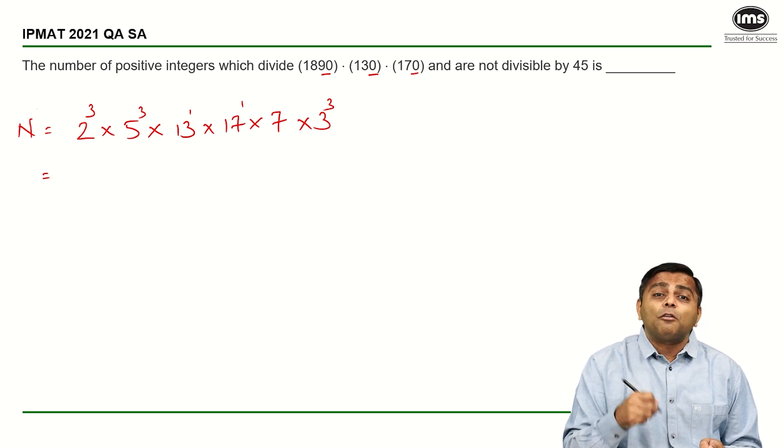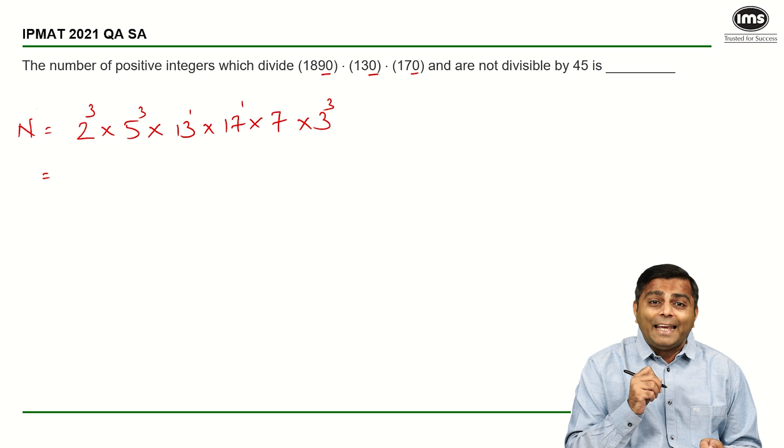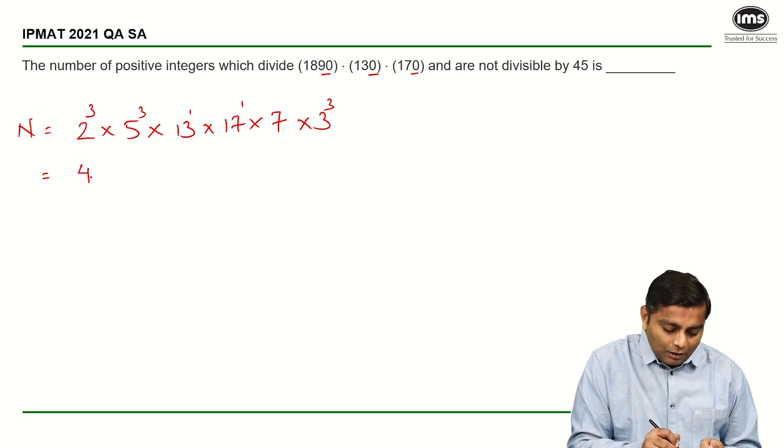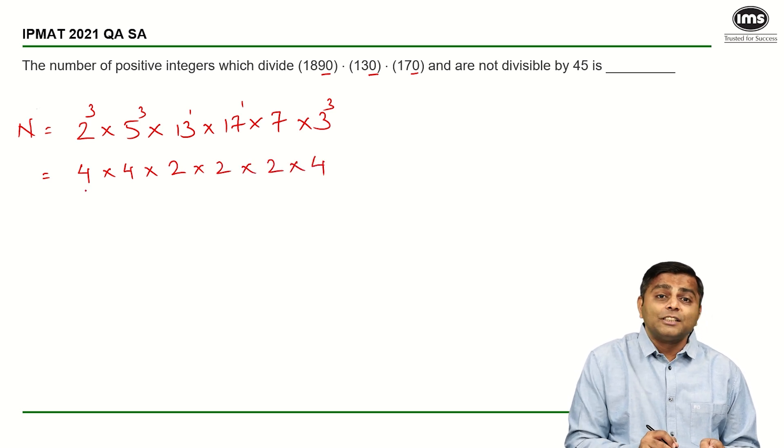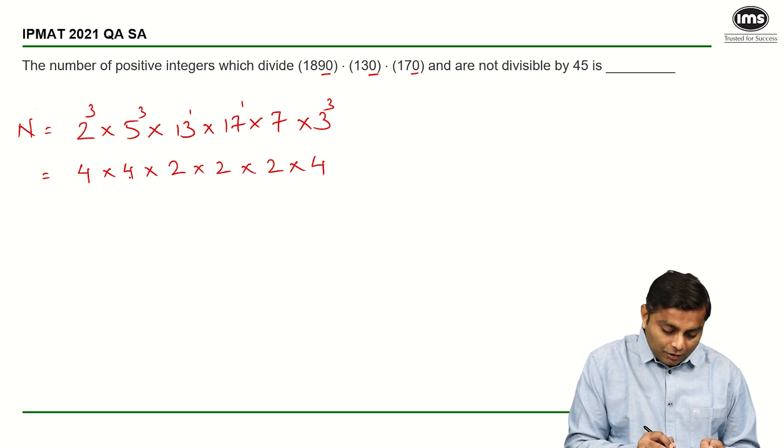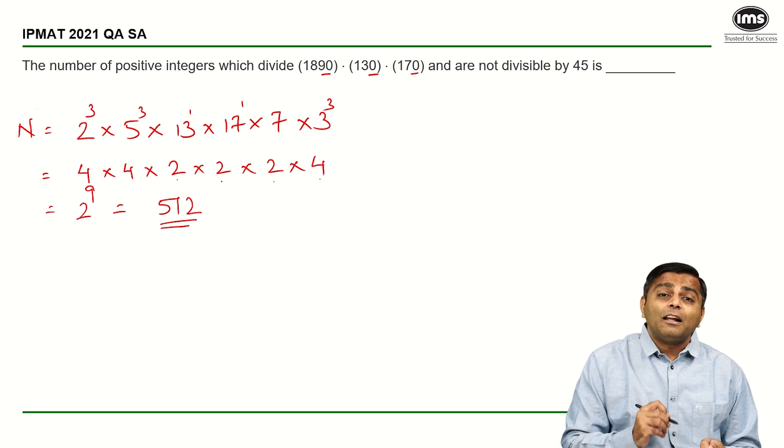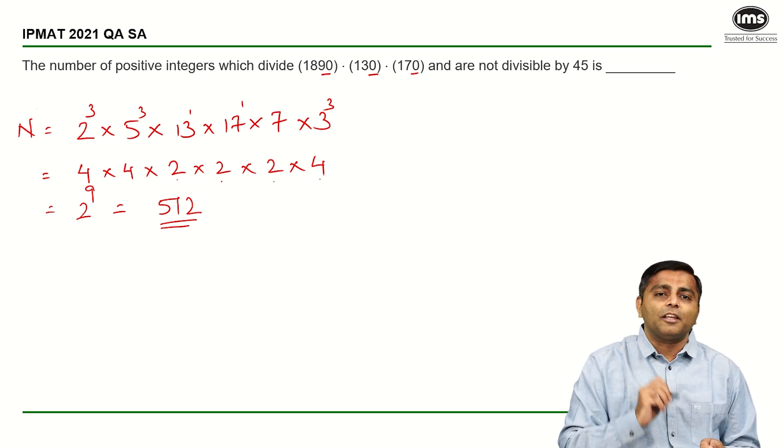Let us find out the total number of factors of this guy n. So it is going to be 4 into 4 into 2, 2, 2 and a 4. This is the first is 2 raised to 2. So we have 2 powers of 2 here, 2 powers of 2 here, which makes it 4, then a 5, 6, 7 and 8, 9. So we have 2 raised to 9, which is nothing but 5, 1, 2. So there are 512 factors of the given number.